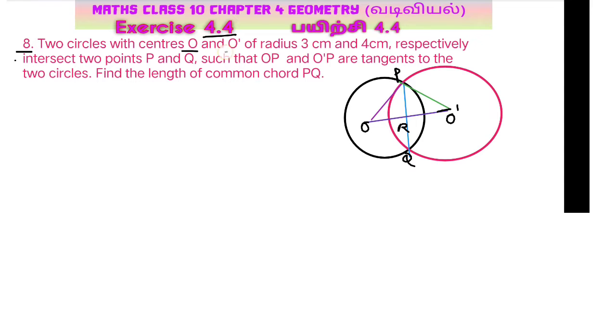Two circles with centers O and O' of radius 3 cm and 4 cm respectively intersect two points P and Q such that OP and O'P are tangents to the two circles. Find the length of common chord PQ.